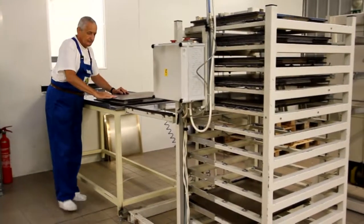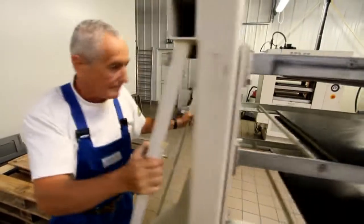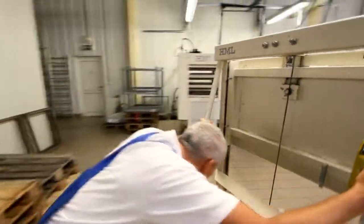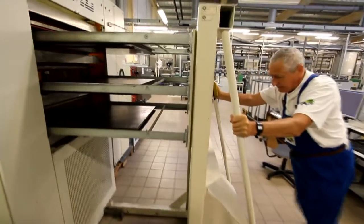The press operator collects three stacks on a loader and loads them into the bonding press. This press uses heated press plates and pressure to bond the layers of the PCB together. The heat melts and cures the epoxy resin in the prepreg while the pressure bonds the PCB together.